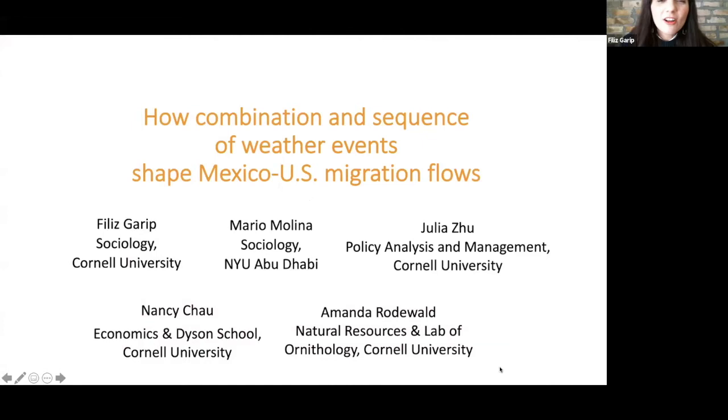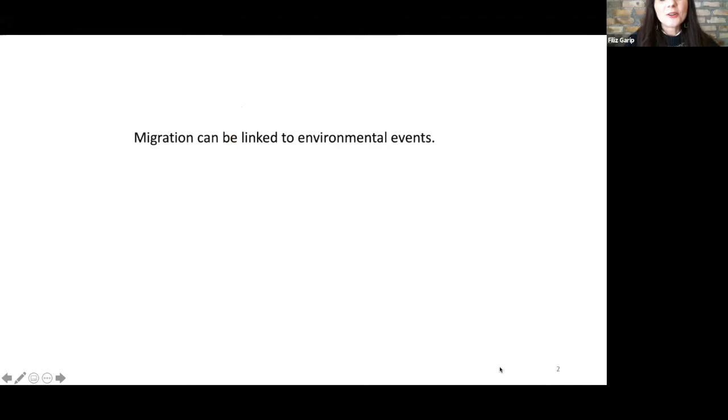Thank you for having me. Let me first acknowledge a large group of people who've supported this project at Cornell. The larger project has been supported by the Atkinson Center grants as well as the Migrations Initiative at Cornell, and my collaborators include Nancy Chow and Amanda Rotowalt from Economics and Natural Resources at Cornell, as well as two amazing students, Mario Molina, who's now a postdoc at NYU Abu Dhabi, and Julia Zhu, who's about to finish her dissertation at Policy Analysis and Management. The first part of the talk will be a joint project spearheaded by Mario. The second part is basically under Julia's leadership.